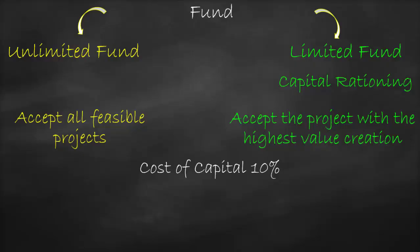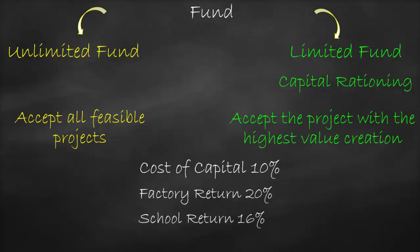Let's assume that the cost of capital for all projects is 10 percent. We have three options: a factory giving a return of 20 percent, a school giving a return of 16 percent, and a hospital giving a return of 8 percent. Let's first assume we have unlimited funds.